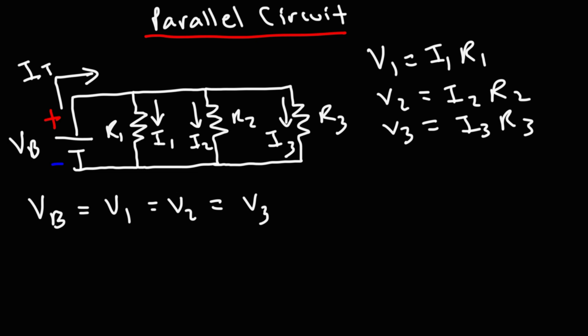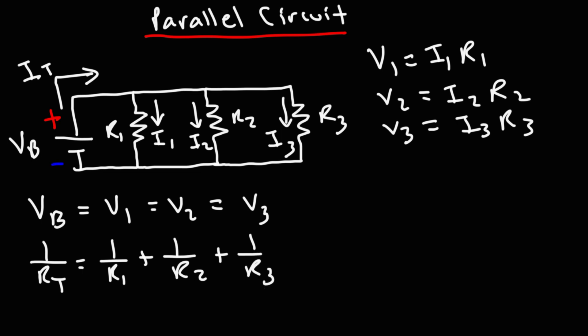In a series circuit, total resistance was the sum of the three resistors. In a parallel circuit, the reciprocal is true: 1 divided by the total (equivalent) resistance equals 1/R1 plus 1/R2 plus 1/R3. In a series circuit, total current IT equaled I1, I2, and I3. For a parallel circuit, the total current is the sum of I1, I2, and I3.